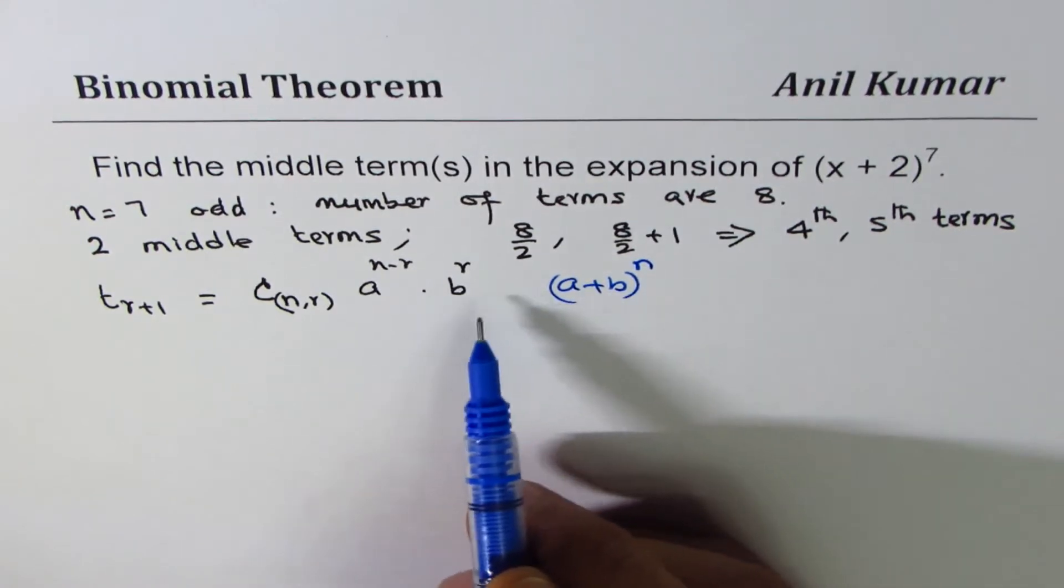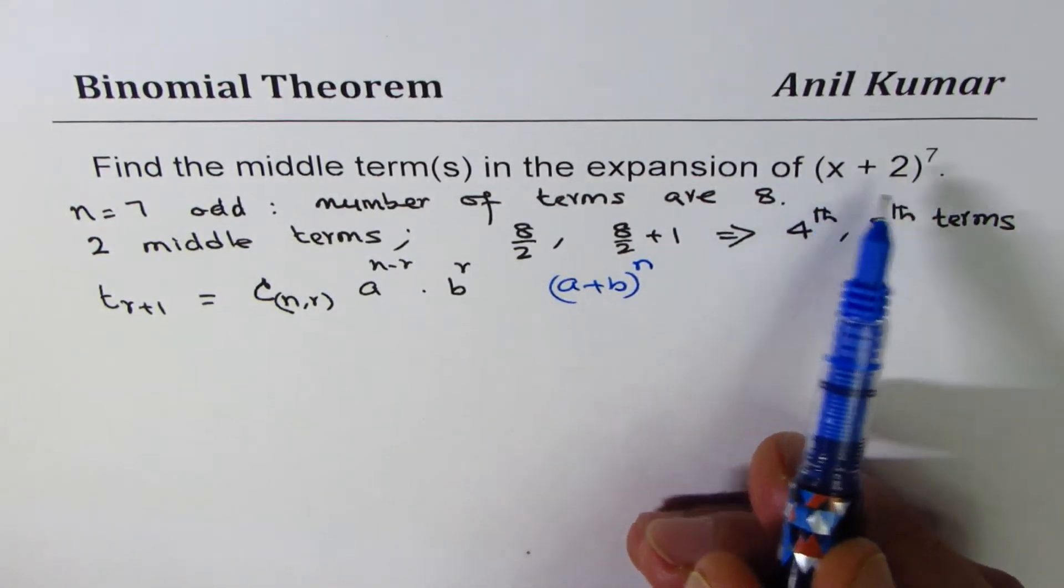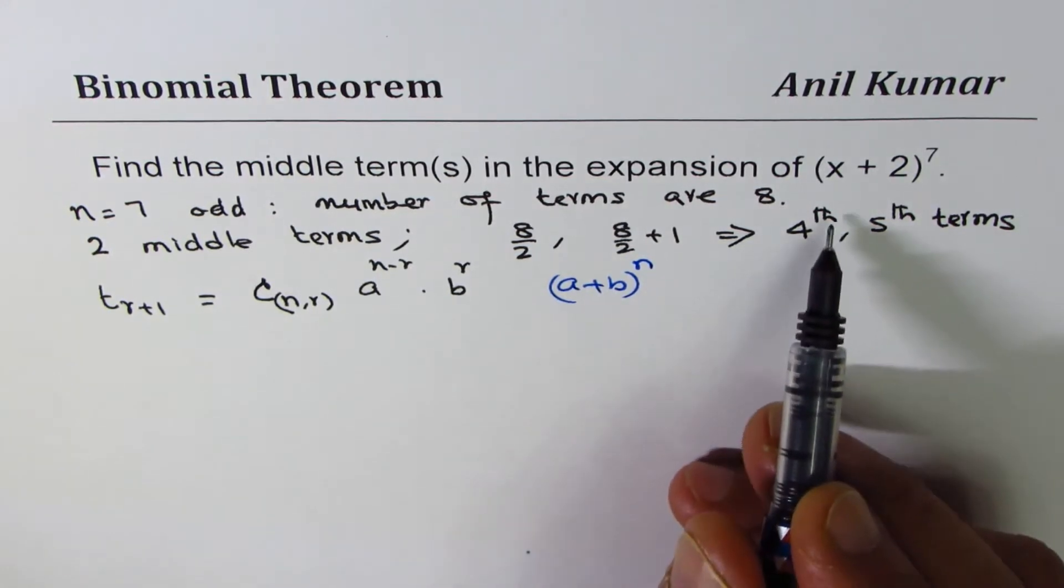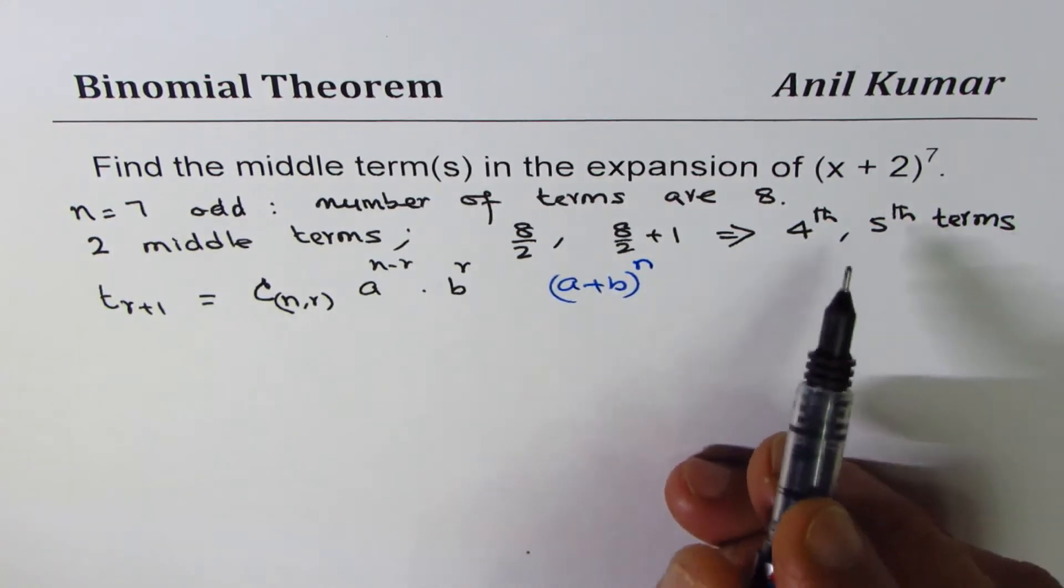So that is the general formula. In our case n is 7. We'll try to find what the 4th term and what the 5th terms are.